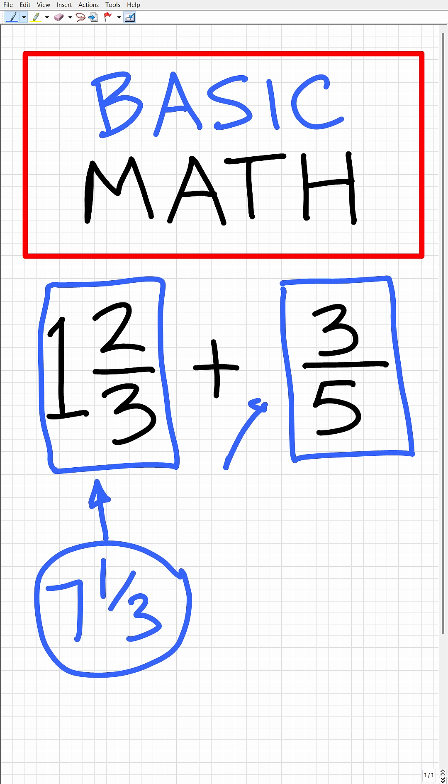Now what makes a fraction a proper fraction is if the numerator, which is the top number in a fraction, is smaller than the bottom number in that fraction that's called the denominator. Well, this is called a proper fraction.